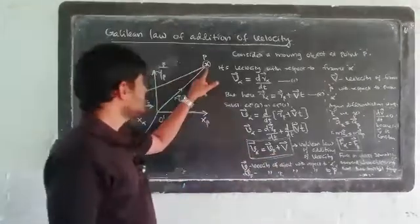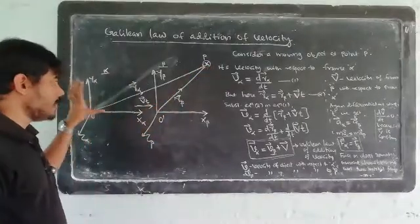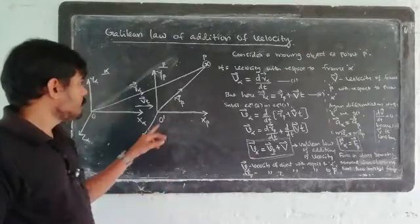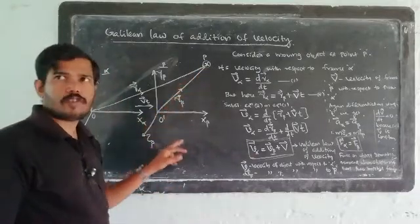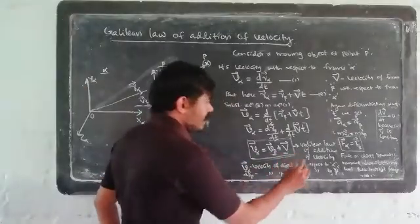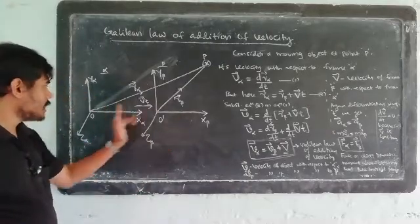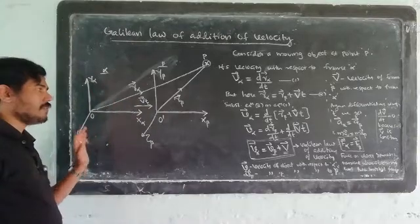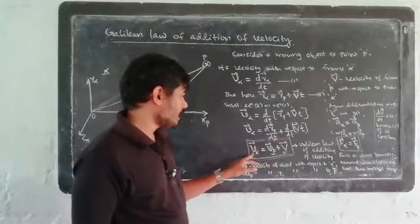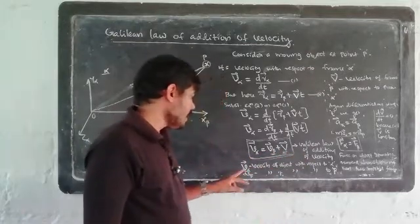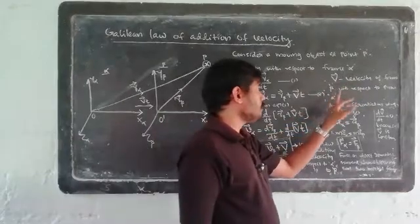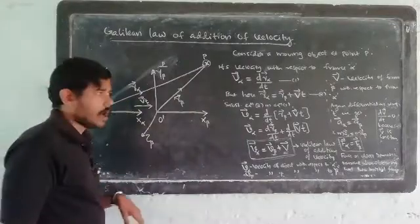So V-alpha equals V-beta plus V. Here V-alpha is the velocity of the object at point P with respect to frame alpha, V-beta is the velocity of the object with respect to frame beta, and V is the velocity of frame beta with respect to frame alpha. This relation gives us the velocity of the object with respect to frame alpha.